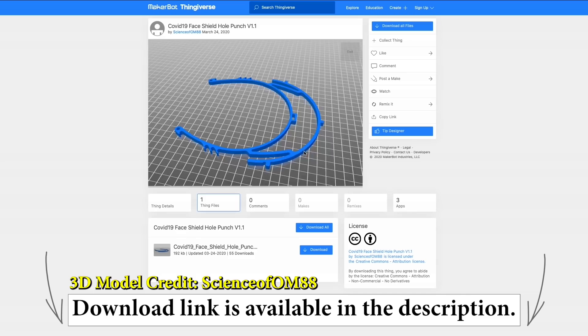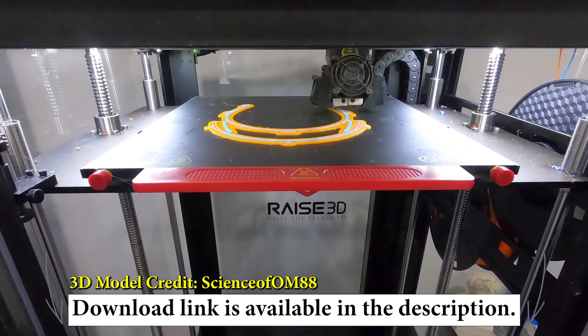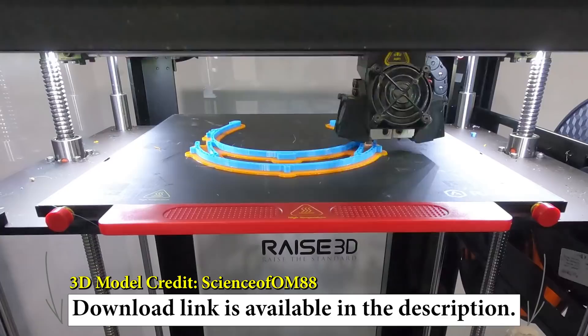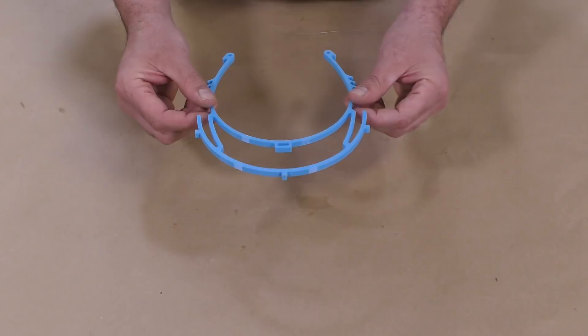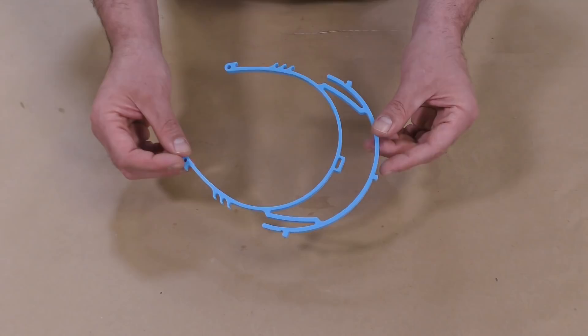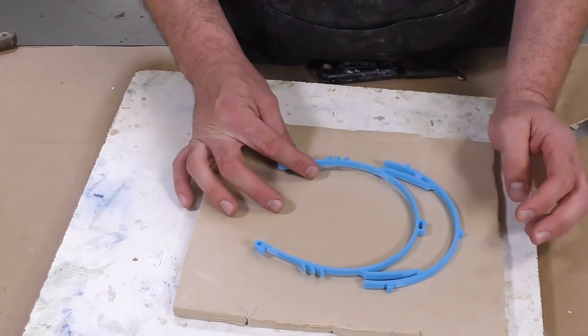Here you can find the file for the 3D print that we used online. This is a free file, you can simply download it and print it. You can see here our printer is going wild trying to get this cranked out today. Once we have the model, we're just going to study it to understand how we're going to actually mold it.